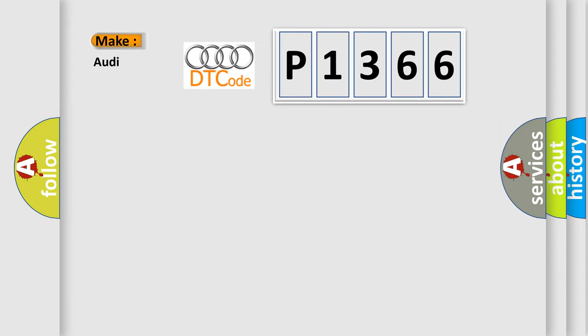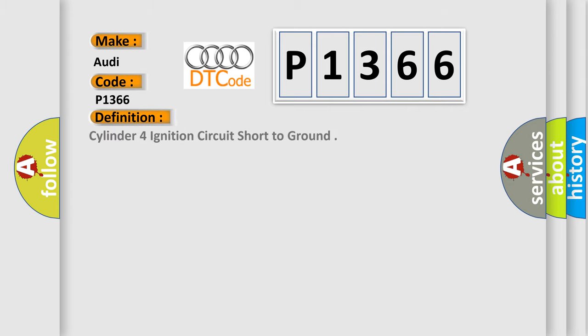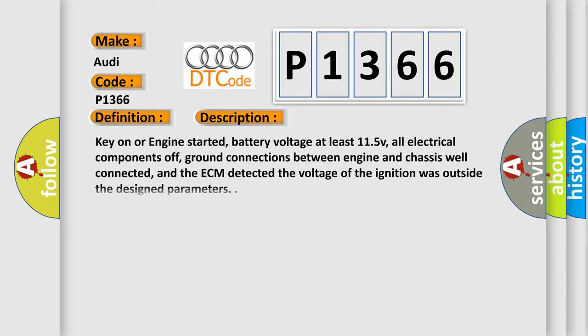So, what does the diagnostic trouble code P1366 interpret specifically for Audi car manufacturers? The basic definition is: Cylinder 4 ignition circuit short to ground. This is a short description of this DTC code: key on or engine started, battery voltage at least 11.5V, all electrical components off, ground connections between engine and chassis well connected, and the ECM detected the voltage of the ignition was outside the design parameters.